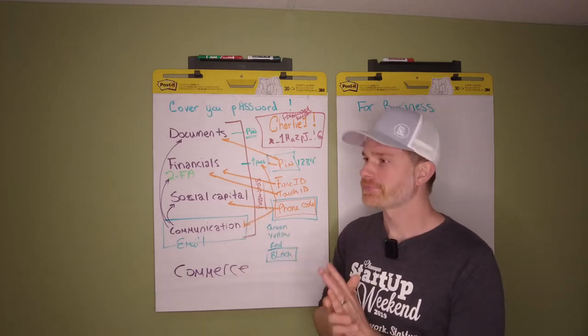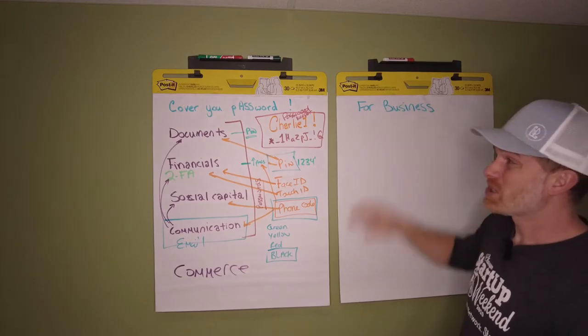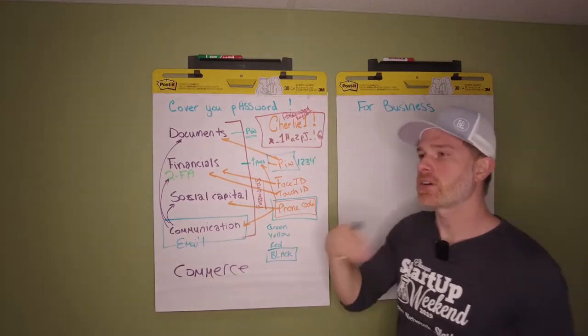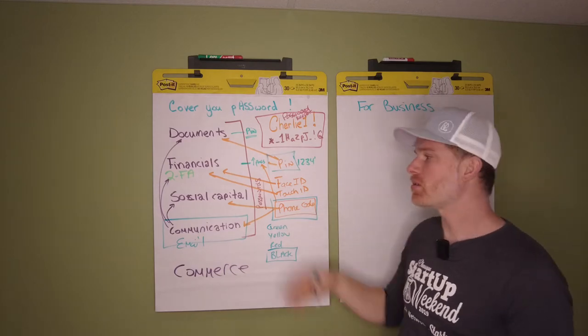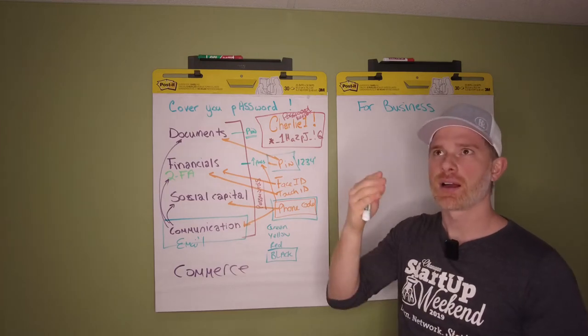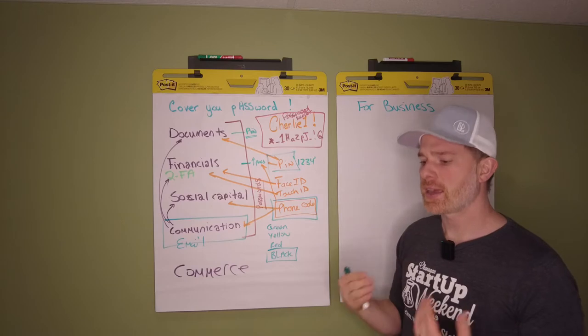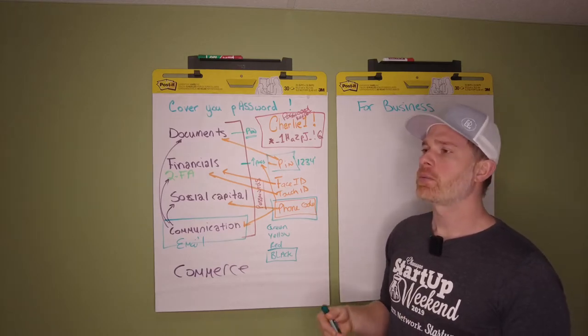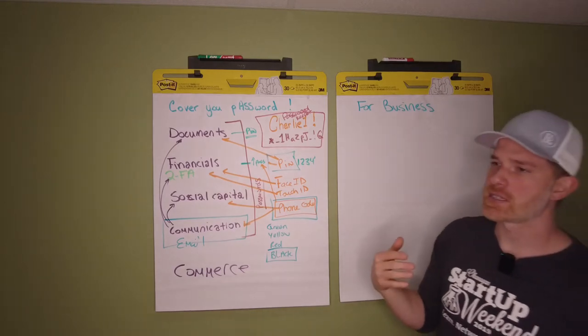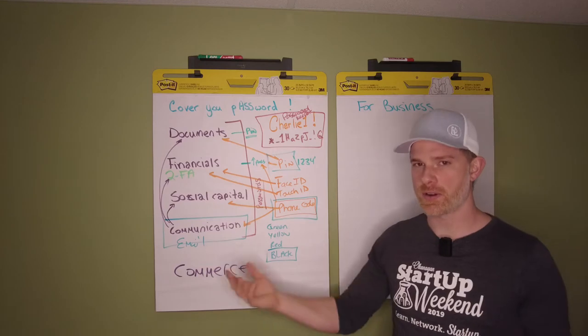Business is really interesting because if you're a sole proprietor, you can kind of work inside this sphere of using, for example, your Apple iCloud keychain to control your information and it will work. But if you have employees, you need to start to understand that these simple methods of self-privacy don't work as far as team privacy.